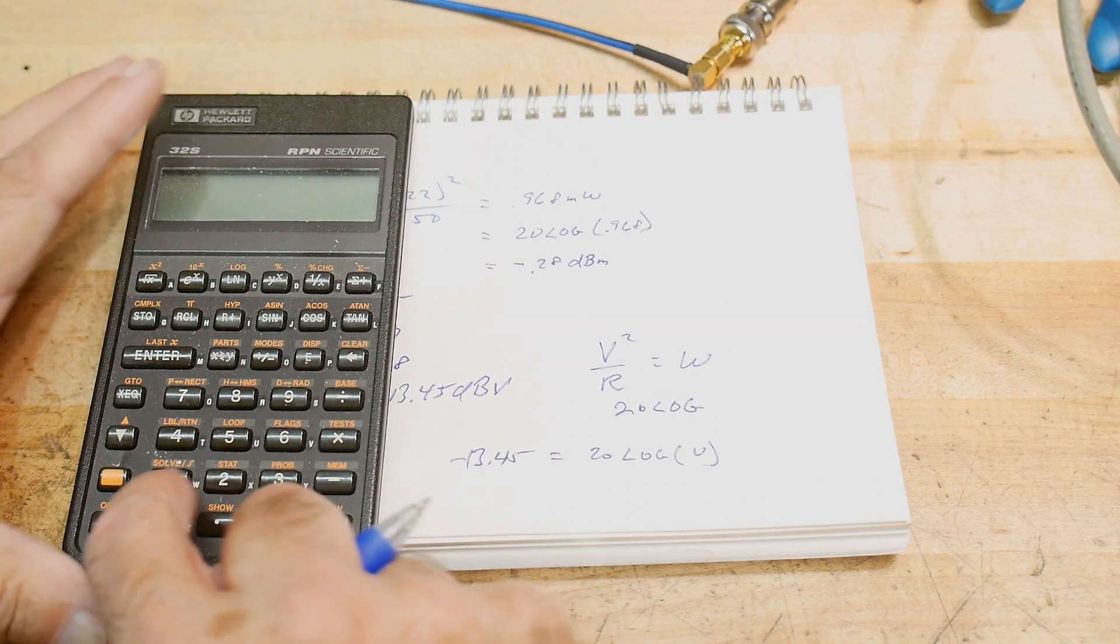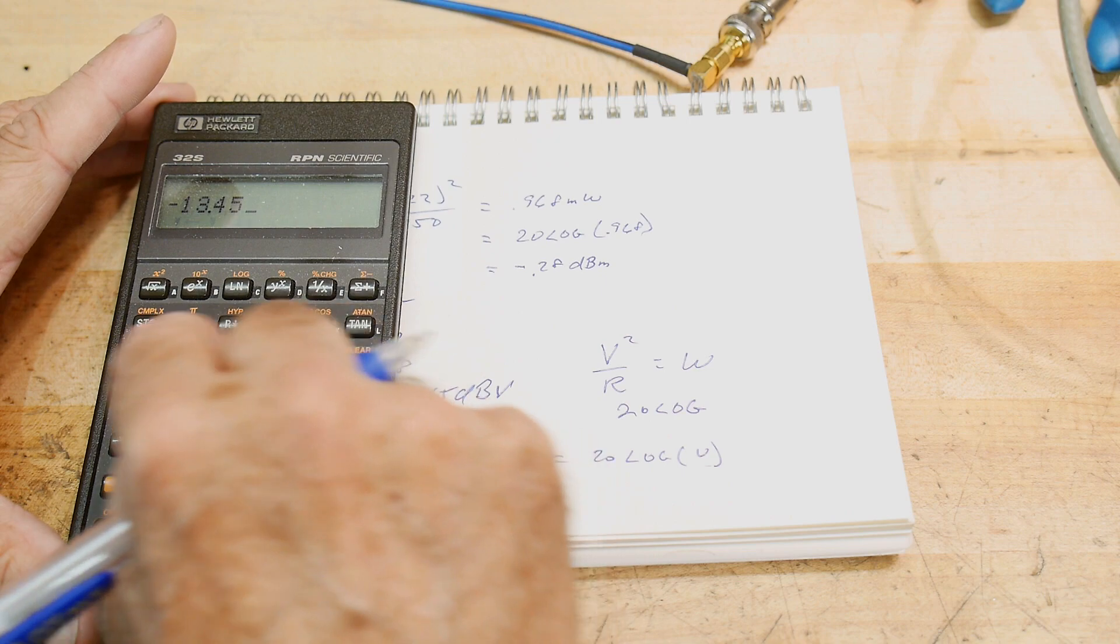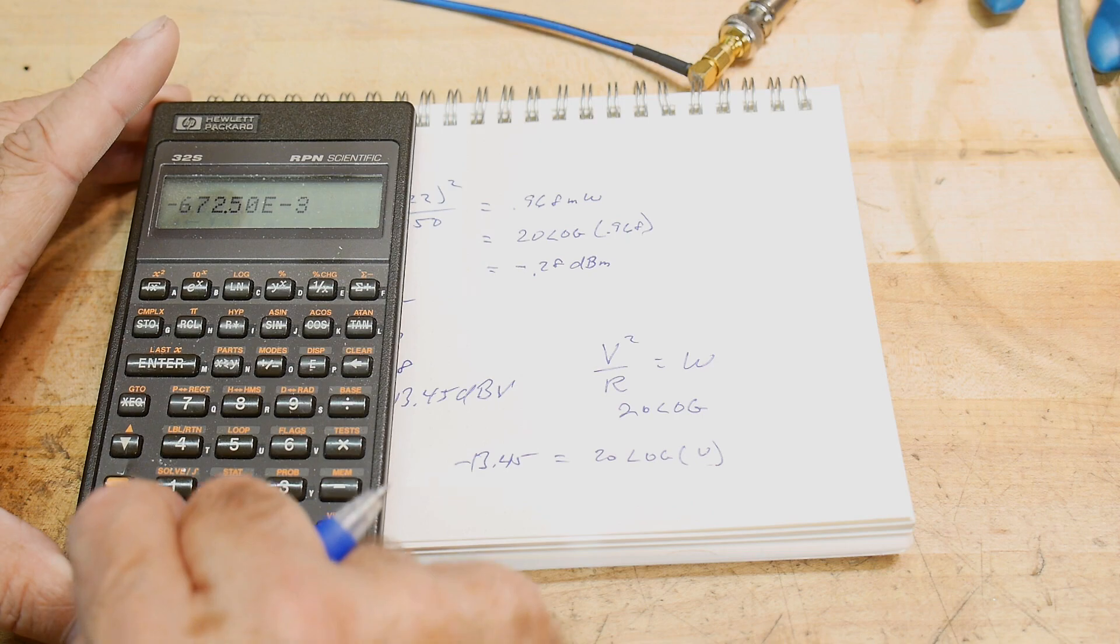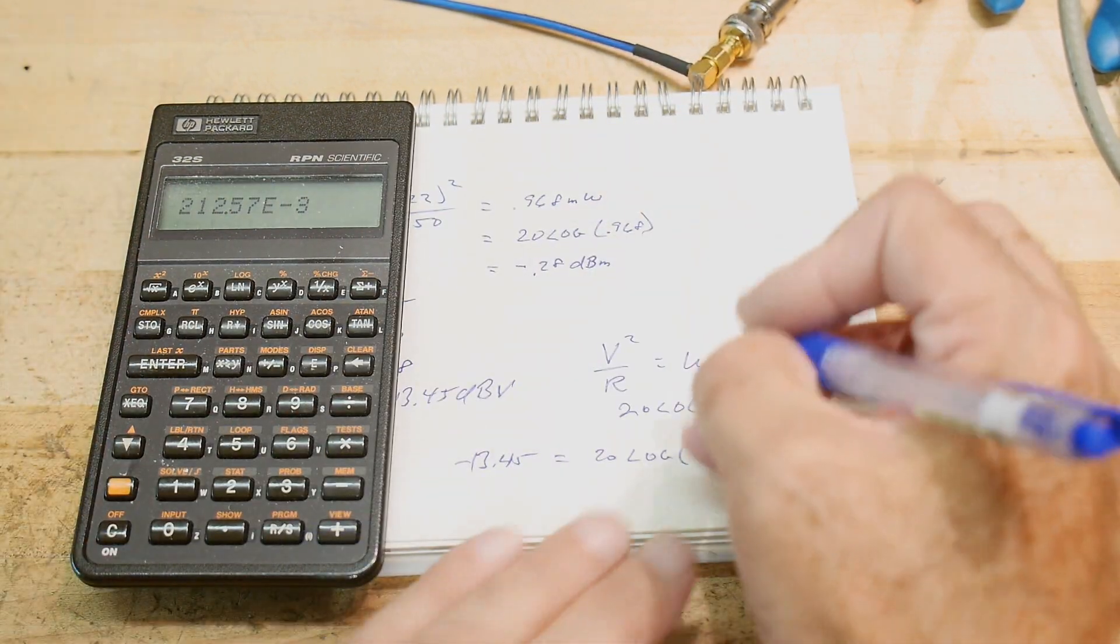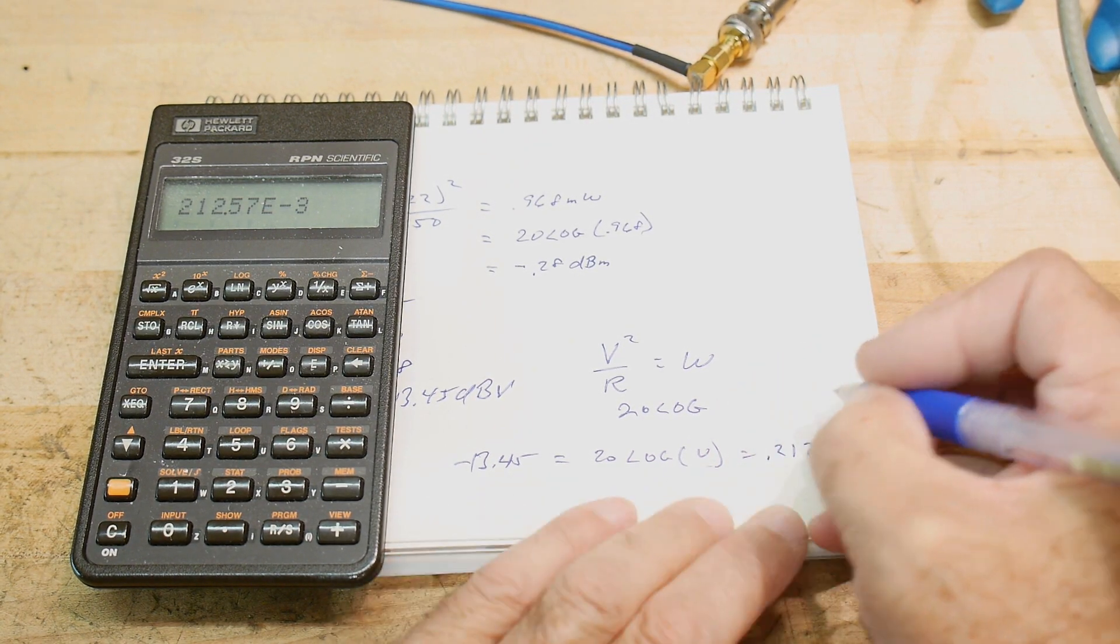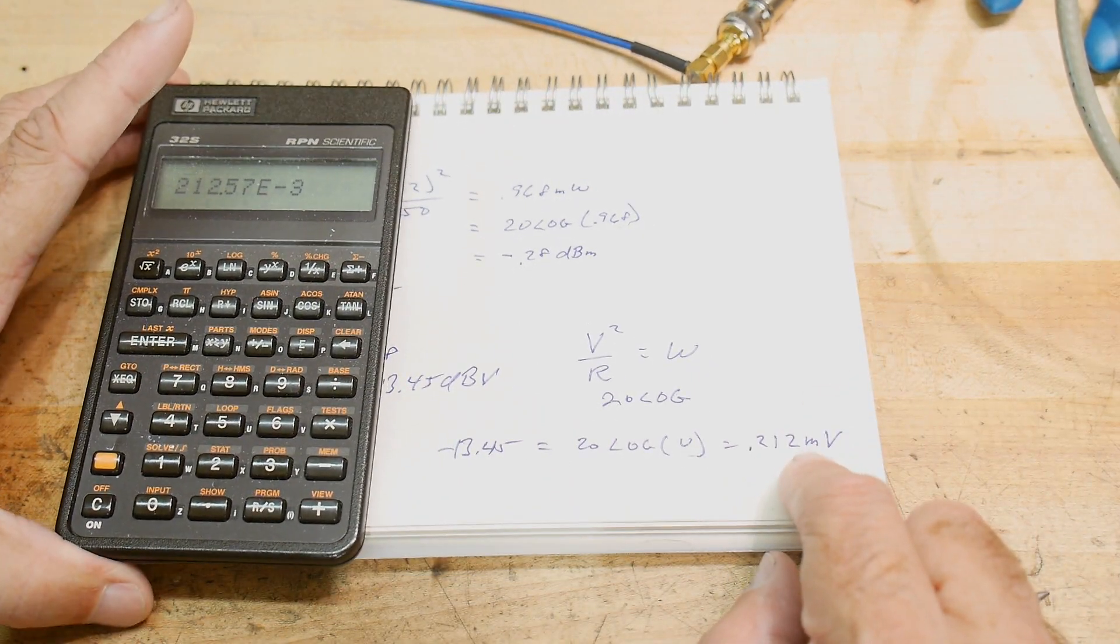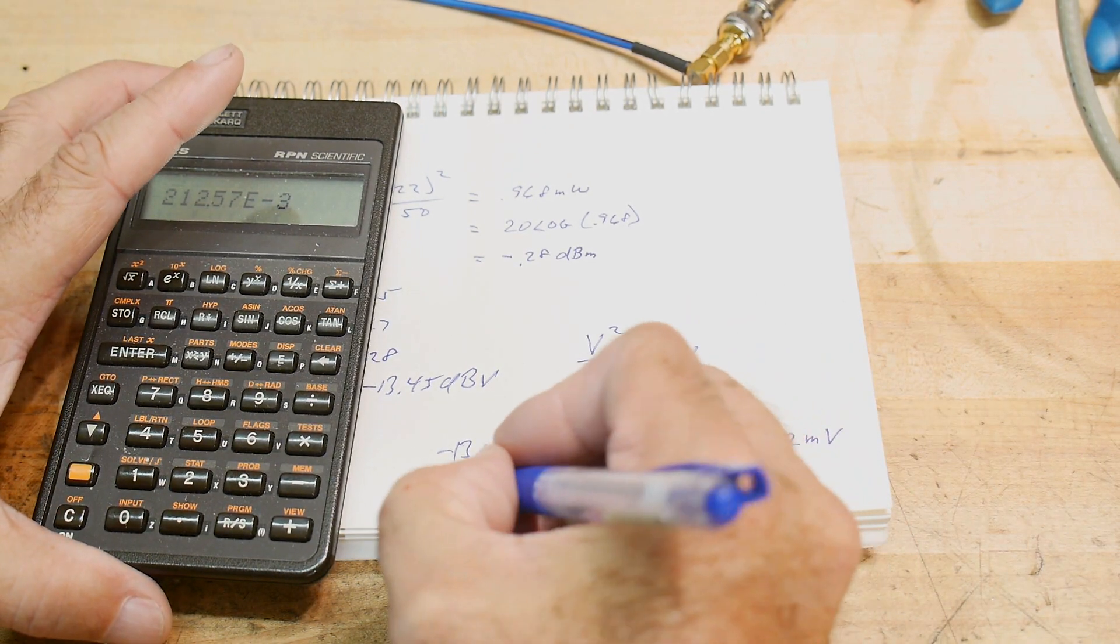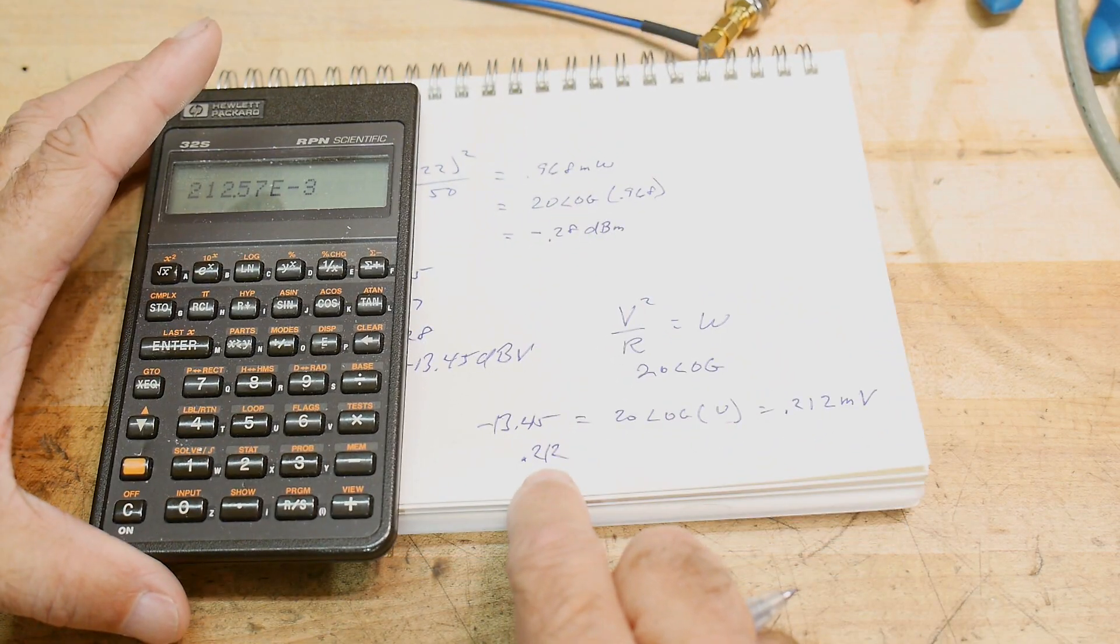So we take minus 13.45 and we divide that by 20 and then we raise that to the 10. 10 raised to that. Equals 0.212 volts. Now that we have volts, that is 0.212 volts.